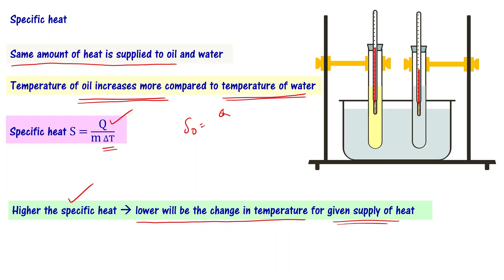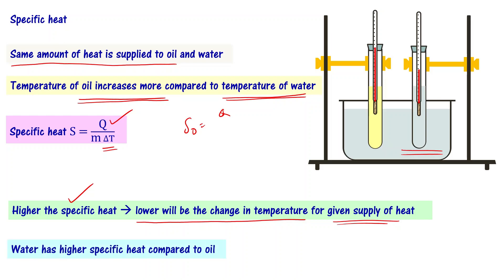Since the heat supply is the same, lower will be the change in temperature for materials having higher specific heat. The change in temperature is less for water in this particular case, which means water has higher specific heat compared to oil.